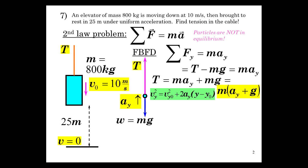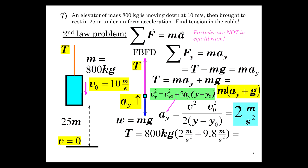V squared is 0 minus 100, negative 100 over 2 times negative 50, gives 2 meters per second squared. There's your acceleration. Let's get the tension, plug the numbers in, 9440 newtons.